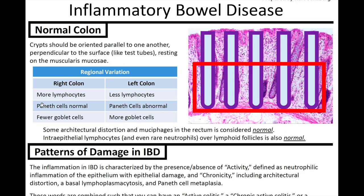Paneth cells are typically associated with the production of antimicrobial peptides and immunity. I associate the appendix, which is on the right side near the cecum and ileocecal valve, as also being involved with immunity. So I think: Paneth cells, immunity, more common on the right. Lymphocytes are also more common on the right. In the left colon, you'll have fewer lymphocytes, Paneth cells are more abnormal to see, but you'll have more goblet cells to produce mucus for fecal excretion.